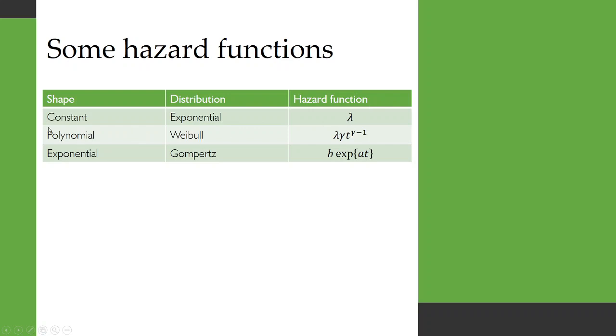If instead we want a polynomial shape to our hazard function, then we will have a Weibull distribution. The hazard function for that is shown here. So when gamma, this parameter here, is greater than one, we'll have hazard which is increasing over time. Whereas if gamma is less than one, we'll have hazard which is decreasing over time.